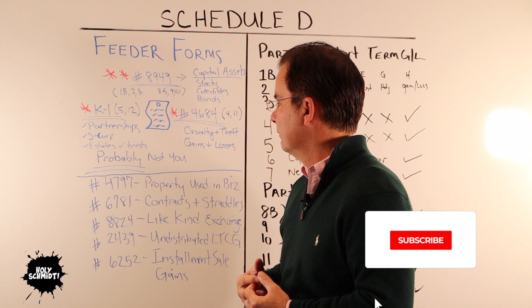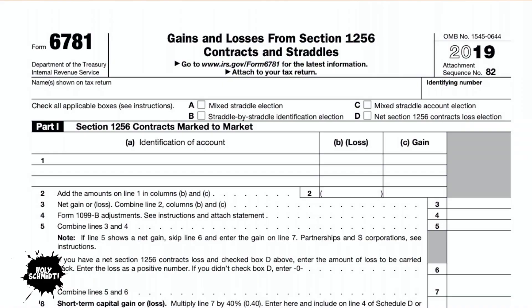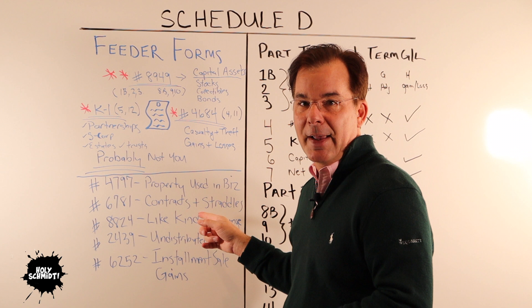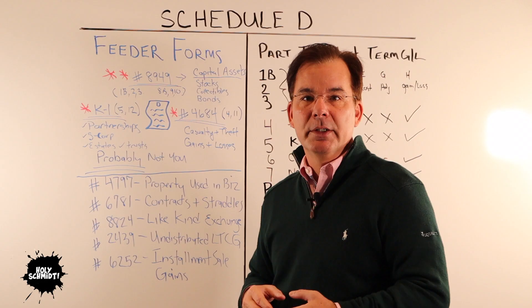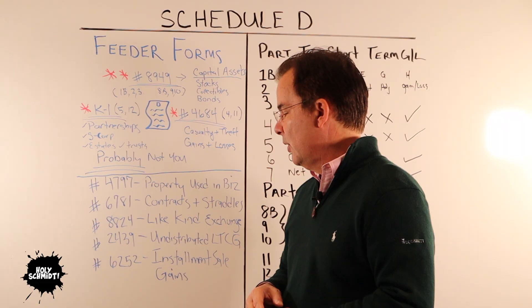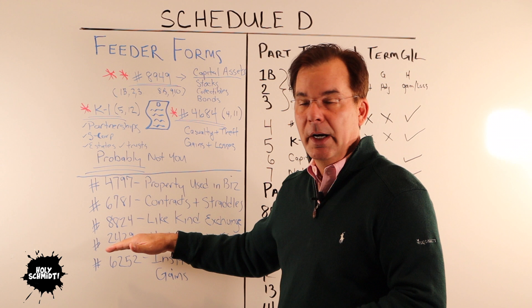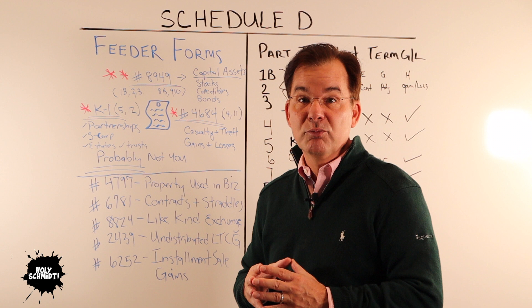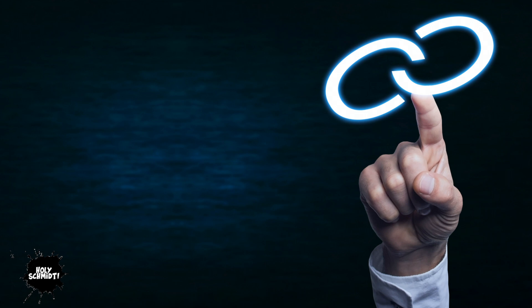You're probably not going to use the following forms, but they are captured on Schedule D as well. That's Form 4797, which is property used in business. Form 6781, which is for contracts and straddles — if you don't know what a straddle is, don't worry about it unless you're trading commodities or other derivatives. Form 2439, which captures undistributed long-term capital gains. And Form 6252, which captures installment sale gains on your tax return. So 4797, 6781, 8824, 2439, and 6252 probably don't apply to you. The single one that most likely does is Form 8949. I have another video on how to fill out Form 8949 — stick around to the end and I will provide a link to that video.